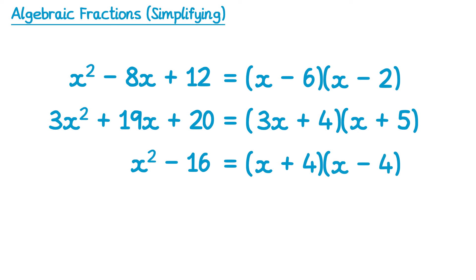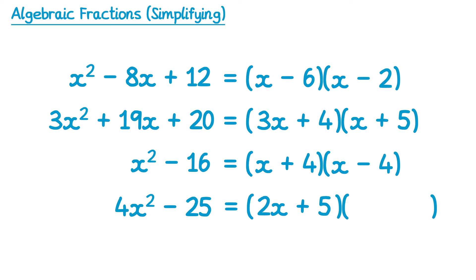You can also get difference of two squares that look like this. Once again you can see the square number 25, but we also have a square number in front of the x squared — 4 is the square number 2. So this one will factorise into two brackets as well. If you square root the 4 you get 2, and if you square root the 25 you get 5. This one's 2x plus 5 and 2x minus 5.